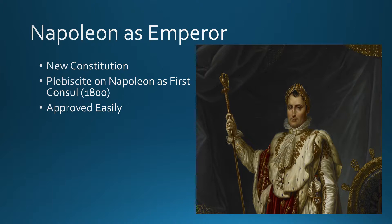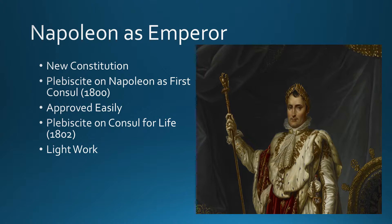Two years later he gives another plebiscite asking: would you like me to be consul for life? This passes very easily as well. Why does this pass so easily? Because even though Napoleon is essentially establishing himself as an absolute ruler, which means freedom, liberty, equality, and separation of powers are not necessarily the case anymore, because of the terror and everything that's happened, people in France are saying enough — we are done with the chaos.